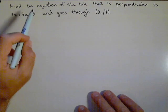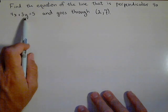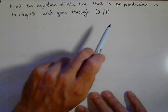Okay, in this problem, we want to find the equation of the line that is perpendicular to the line 4x plus 3y equals 5 and goes through (2,7).